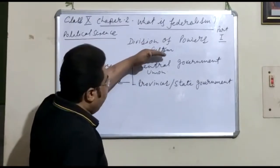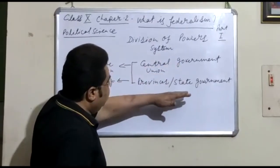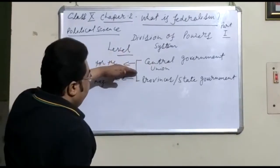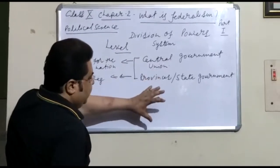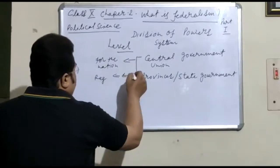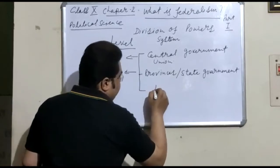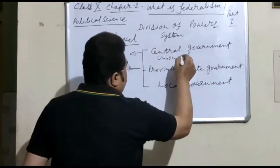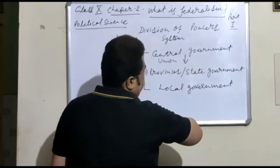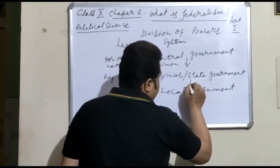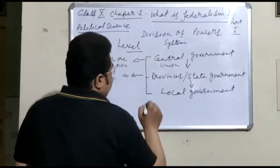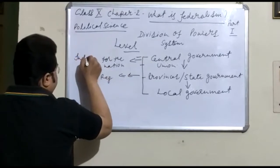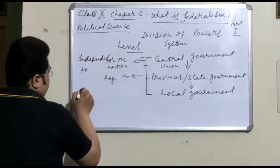Powers are divided between Central Government and State Governments. There are two levels where powers are divided. One level would look after the entire country, another level would look after the State or particular Provinces. Further, the flow of power goes to the local government. So, division of powers flows from the Central Government to the State Government and further to the local government.